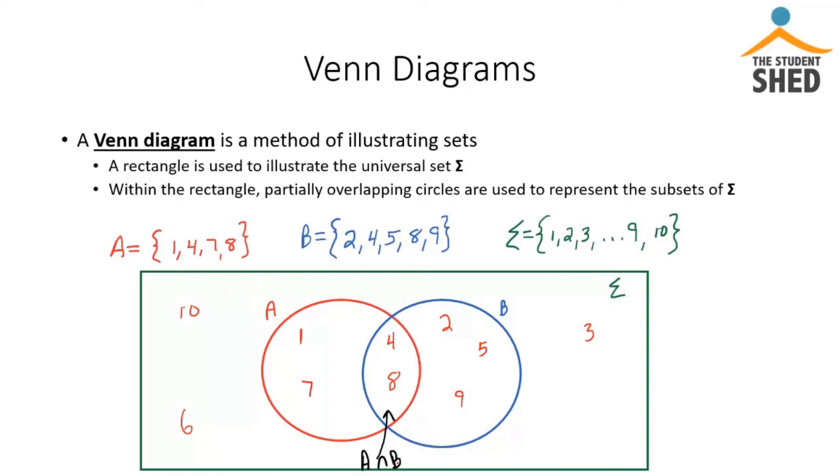And notice in here I made a note that the overlap of the two circles, this is your A intersect B. So if we were to find A intersect B for these two sets, the intersection of A and B, what they have in common would be 4 and 8. Which is what we have in the overlap of our two circles representing set A and set B.